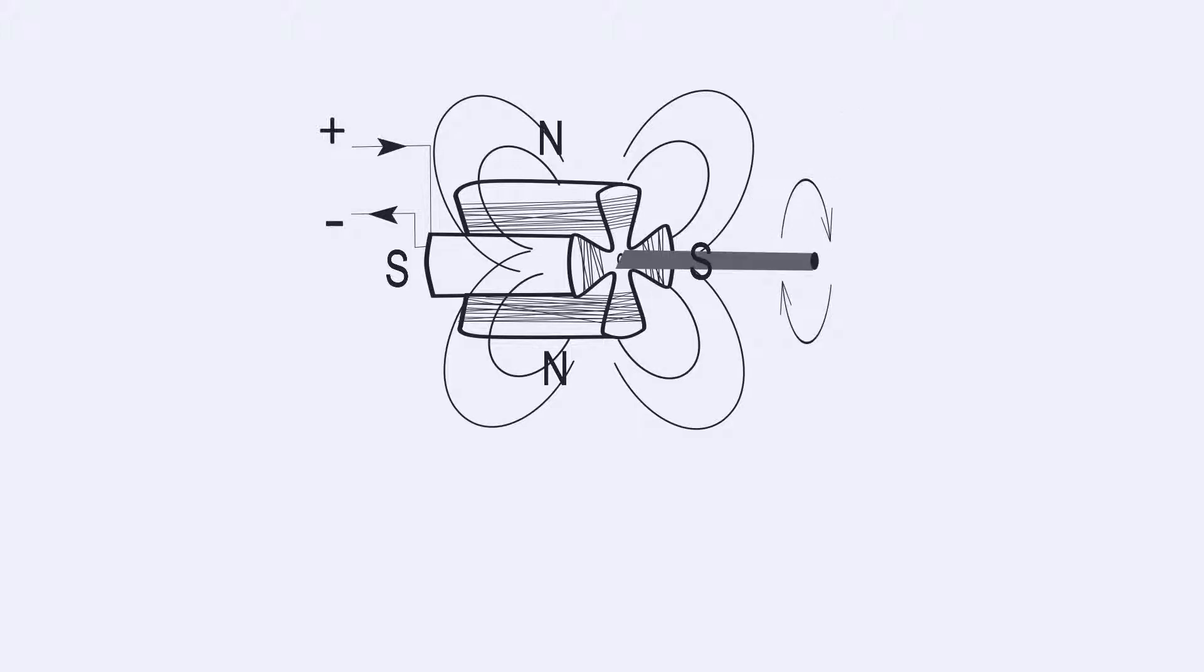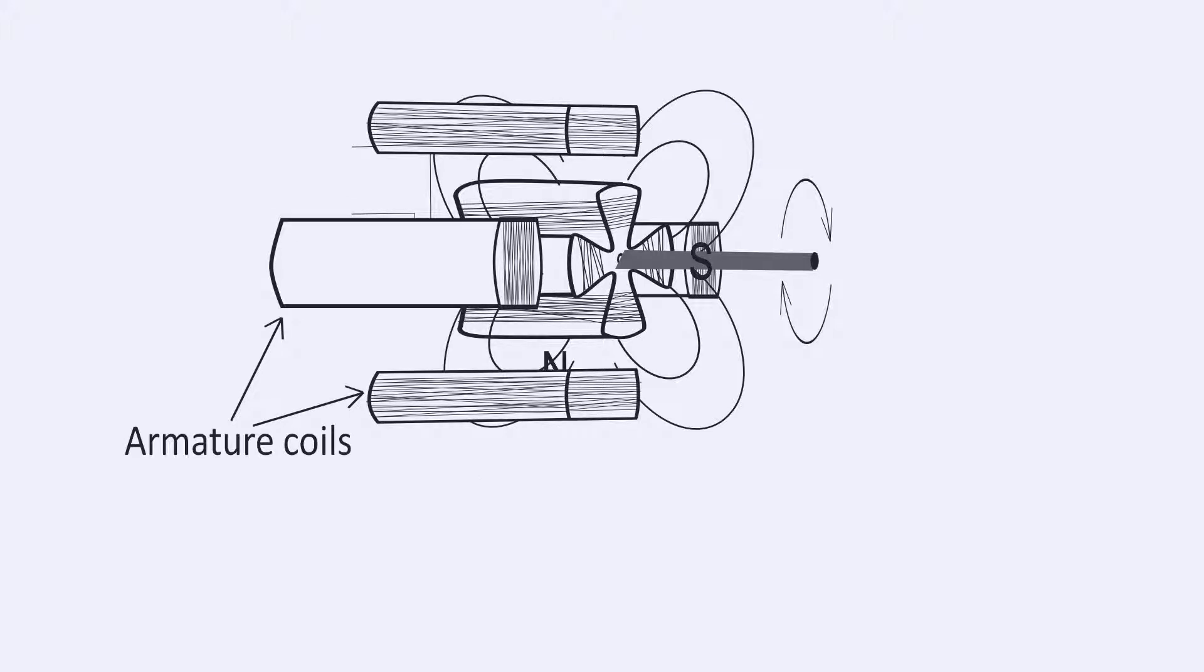The rotor is made to rotate by a prime mover. This makes the rotor flux also rotate along with it at the same speed. Such a revolving magnetic flux now intersects the armature coils, which are fitted around the rotor. This generates an alternating EMF across the winding.